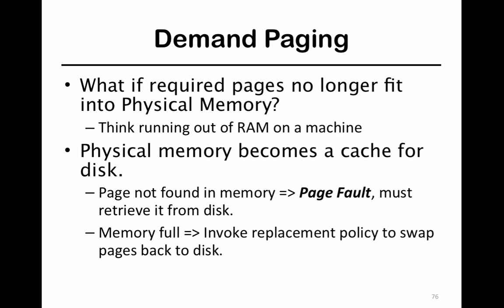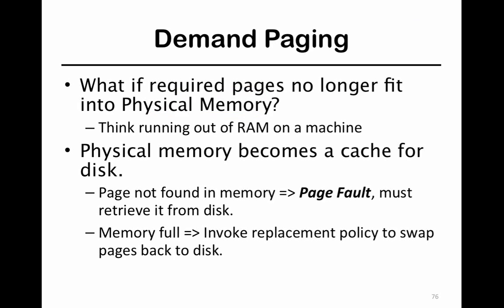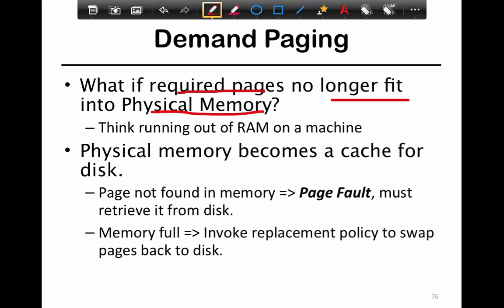The main concern is: what if the required page no longer fits in physical memory — that is, we're running out of RAM. Then physical memory can effectively be thought of as a cache for disk. When you have a whole bunch of pages consisting of all the processes currently running on the system, you want to keep the more important pages in physical memory and the less important ones on disk. This is known as swap space.